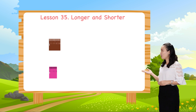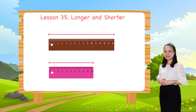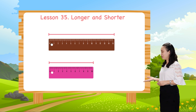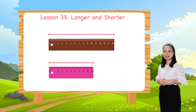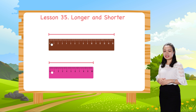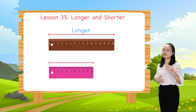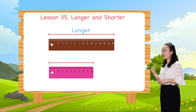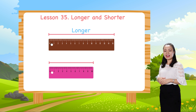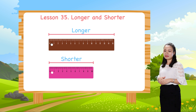Look! We have two rulers — a brown and a pink one. We say the brown ruler is longer than the pink ruler, or the pink ruler is shorter than the brown ruler.